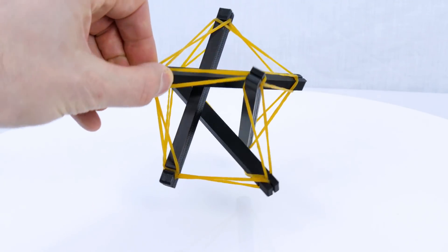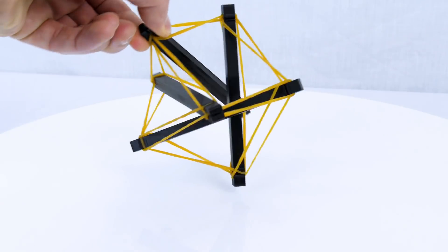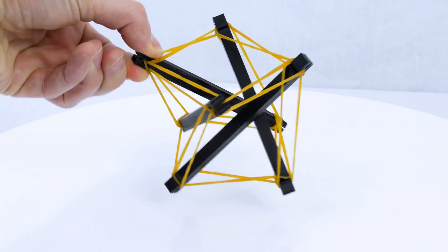The tension provided by the elastic bands holds all four rigid members in equilibrium so none of them touch each other.